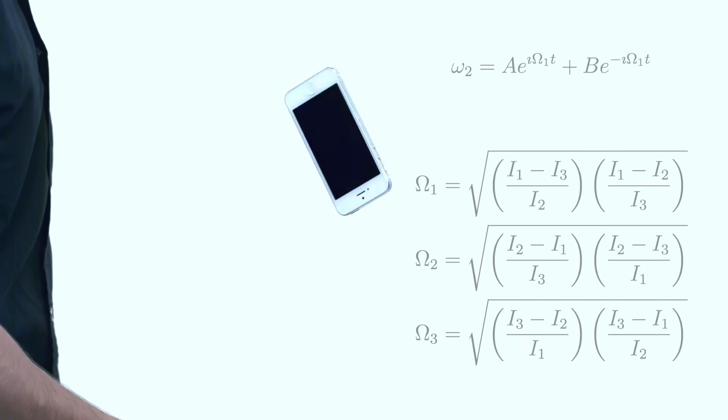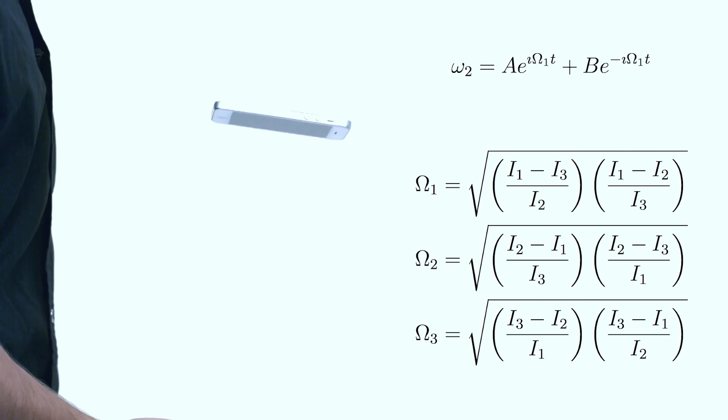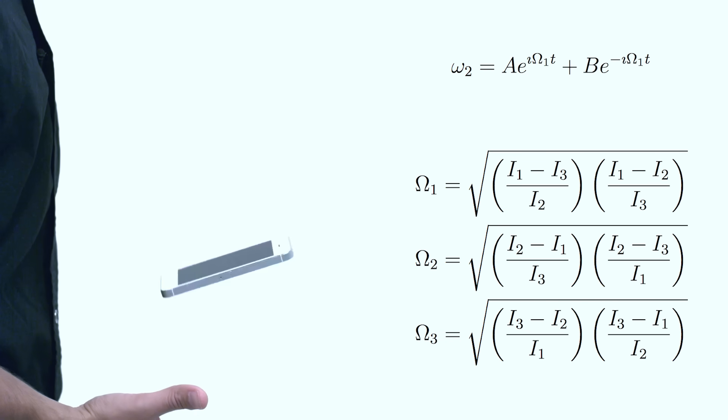So why does this happen? Well, the mathematics is kind of complicated, but it's similar to the mathematics of a rigid pendulum. So if you're flipping the phone along its long axis or its short axis, the phone acts a little bit like this pendulum in that any perturbation will cause it simply to go back to where it was before.